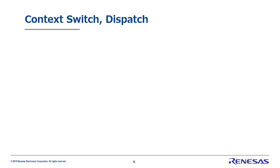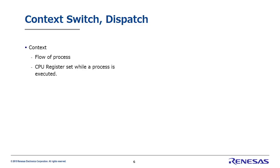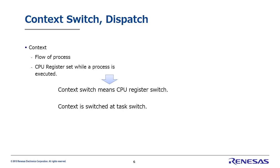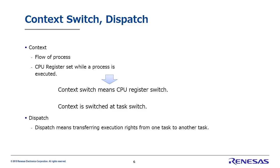Now we should define some terms. We'll start with context. Originally, the term context referred to the flow of software processing. Deriving from this, context now means the CPU register set contents of a given executed process. As a result, the rewriting of the CPU registers is called a context switch. Whenever a task switch occurs, a context switch is executed. Next is dispatch. A dispatch is when one task transfers execution rights to another. Therefore, dispatch processes accompany context switches.